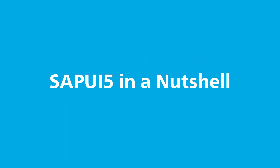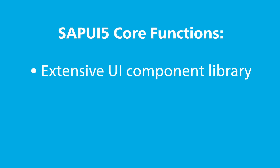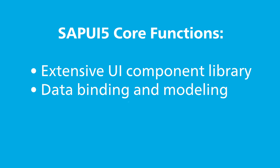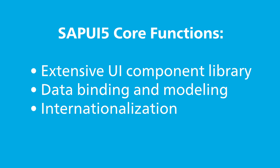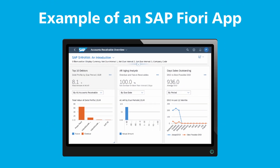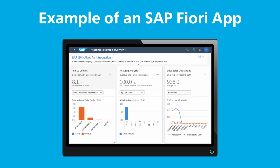SAPUI5 is a proprietary JavaScript framework designed specifically for the development of SAP applications. Its core functions include: providing ready-made components for various use cases, supporting the synchronization of data between the UI and the backend, facilitating the adaptation of applications to different languages and regions, and enabling the appearance to be adapted to the company's corporate identity. SAPUI5 is supported and documented by SAP, and is mainly used in enterprise applications such as SAP S/4HANA, SAP Fiori Launchpad, and SAP Business Suite.